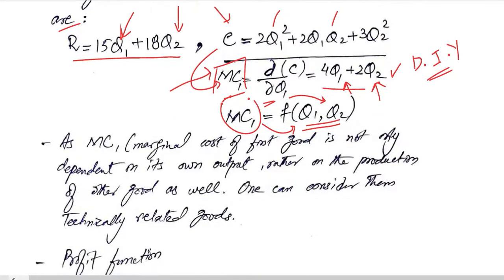If there was no existence of Q2 then it would have meant that they are technically unrelated. Since we have Q2 in this MC1 function, it means that there is technical relation between the two goods.